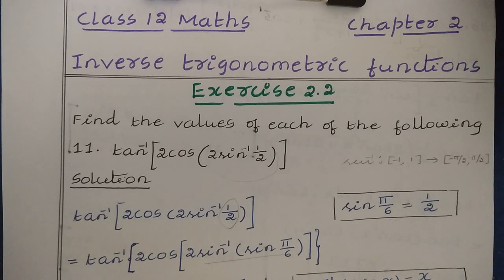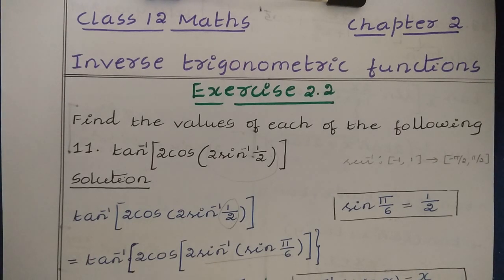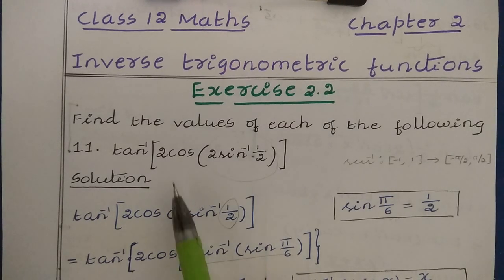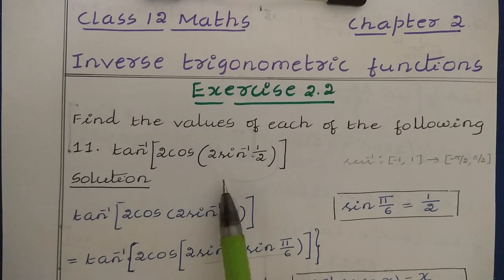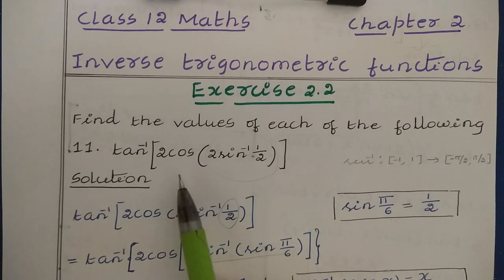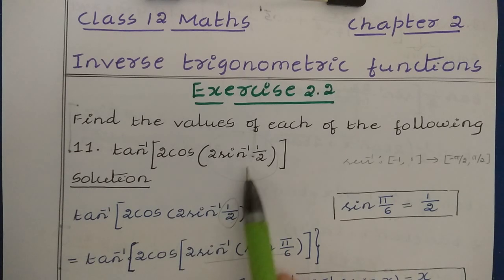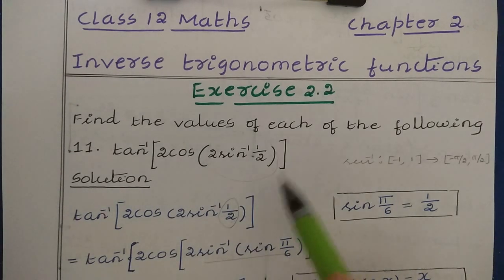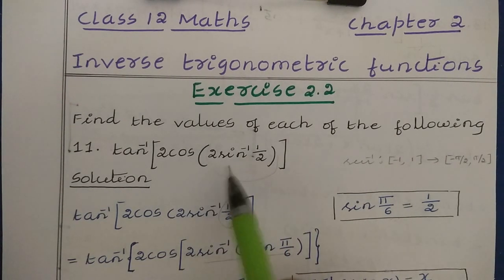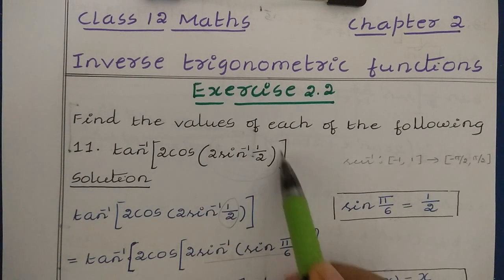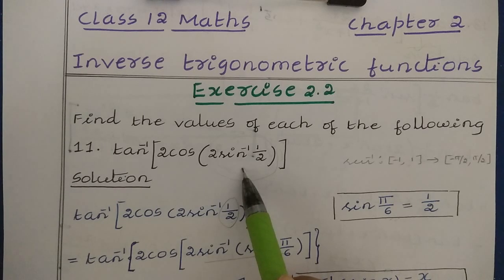Question number 11: find the value of tan inverse of 2 cos of 2 sine inverse of half. To solve this, we have tan inverse and cos as well as sine inverse. We can solve the value of sine inverse half directly.